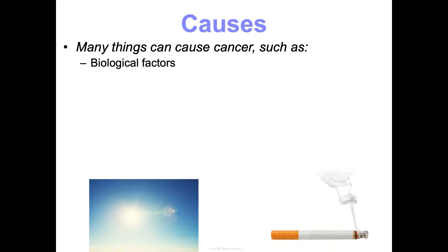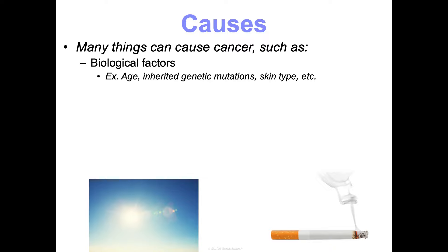Biological factors include age, inherited genetic mutations, and skin type. For instance, breast cancer is much more common in your 50s or 60s than in your 30s, but you can get it in your 30s especially if you inherit a genetic mutation like BRCA1, which gives a genetic predisposition to breast cancer. Skin type also matters — extremely pale skin, like that of Irish heritage, makes someone more susceptible to skin damage and skin cancer.